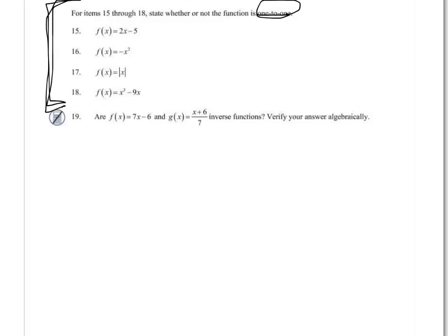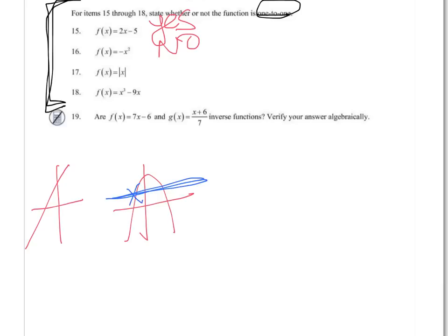So for 15, it's a line, so yes, that one is one-to-one. 16 is an upside-down parabola. That is not one-to-one. It doesn't pass the horizontal line test, meaning the inverse won't be a function.